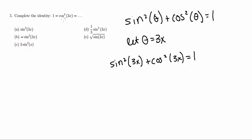So now, since I want it to be 1 minus cosine squared of 3x, I'm going to go ahead and subtract this cosine from both sides to bring it from the left-hand side to the right-hand side.